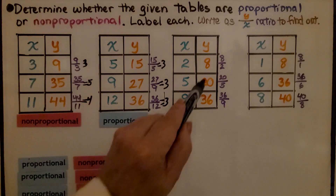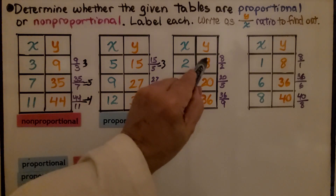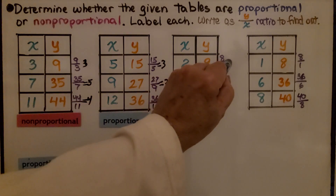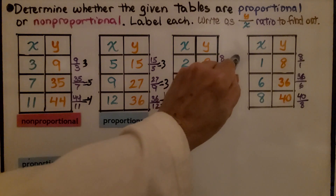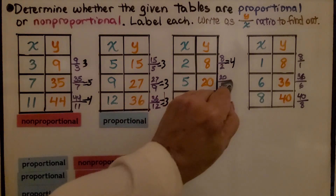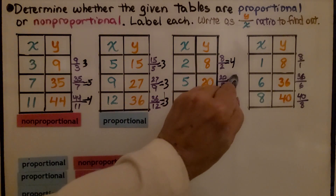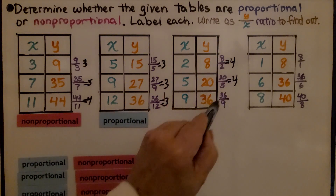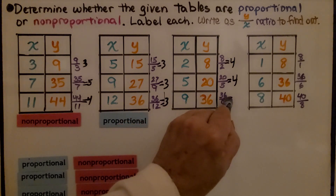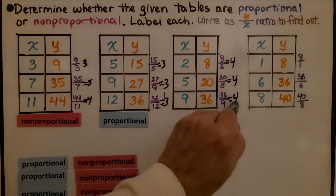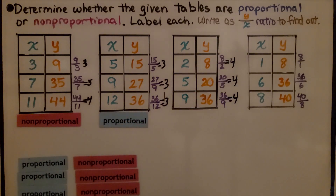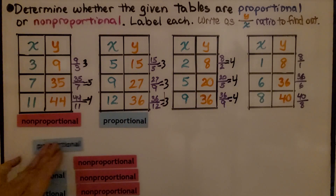Let's look at this one. We have 8 halves, which equals 4. We have 20 fifths, which equals 4. And we have 36 ninths, which equals 4. We have a constant rate of change — it's all 4. That's proportional.